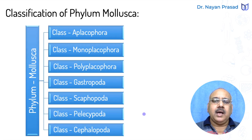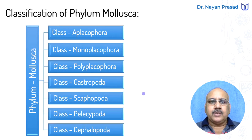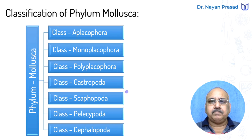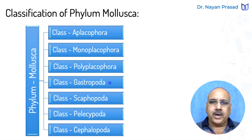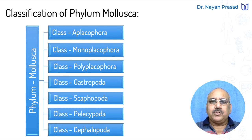Phylum Mollusca has been divided into seven different classes on the basis of their different features — the shell, the foot, and other structures. These classes are: Class Aplacophora, Monoplacophora, Polyplacophora, Gastropoda, Scaphopoda, Pelecypoda, and Cephalopoda. We have to see about their features one by one.